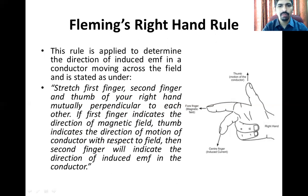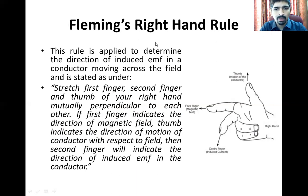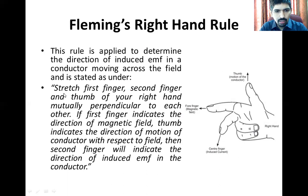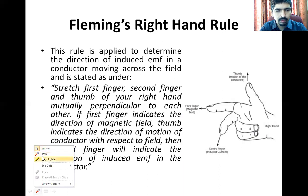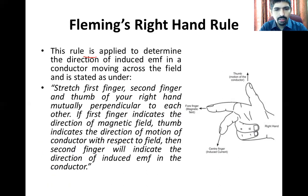First one is Fleming's right-hand rule. You can see a hand — the right hand of any person. This rule is applied to determine the direction of induced EMF in a conductor moving across the field, and is stated as under: stretch the first finger.